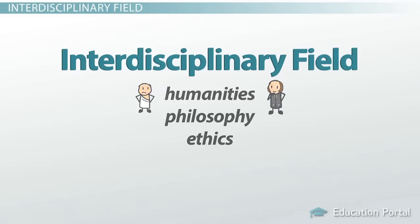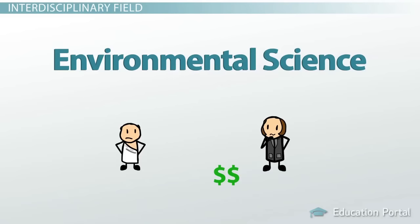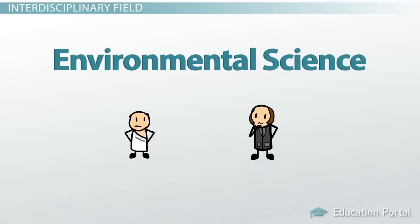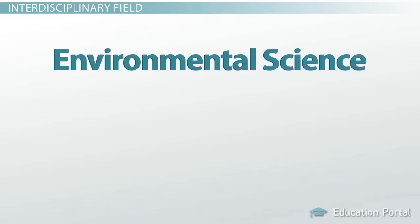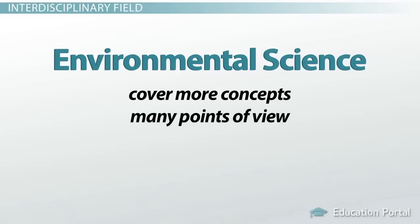By combining aspects of the natural sciences, social sciences, and the humanities, the field of environmental science can cover more concepts and also examine problems and topics from many different points of view.